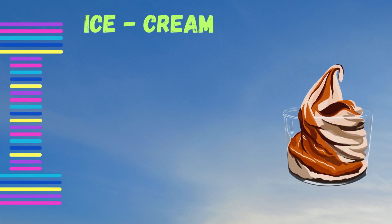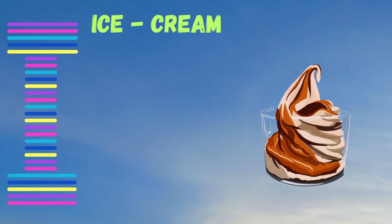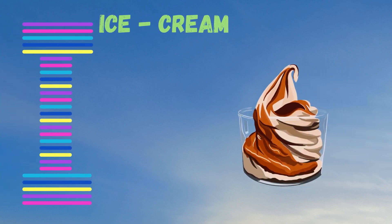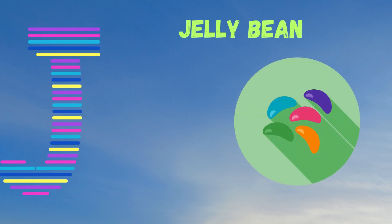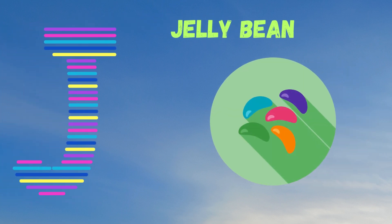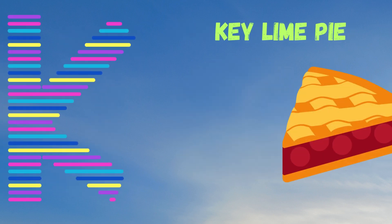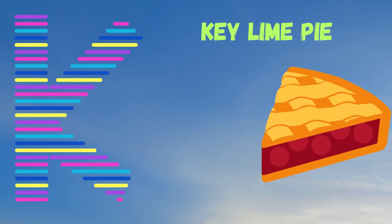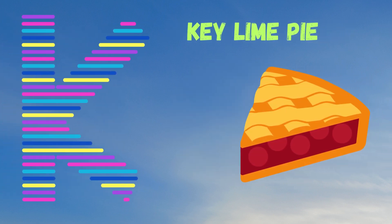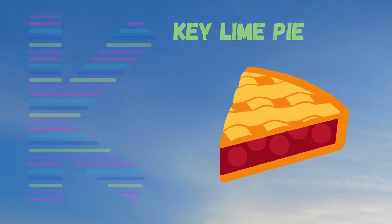I is for Ice Cream. I, I, Ice Cream. J is for Jelly Bean. J, J, Jelly Bean. K is for Key Lime Pie. K, K, Key Lime Pie.